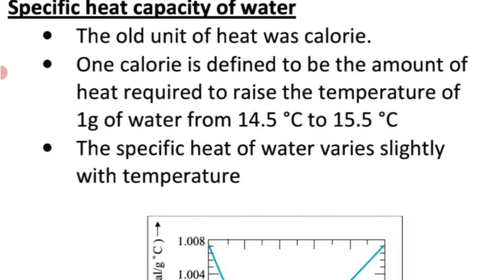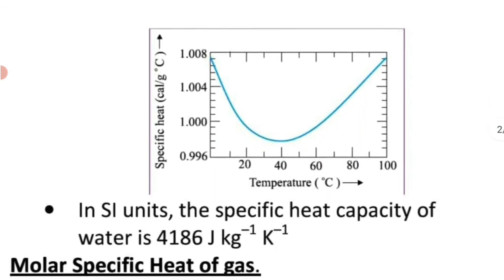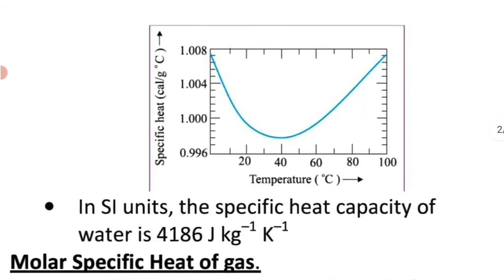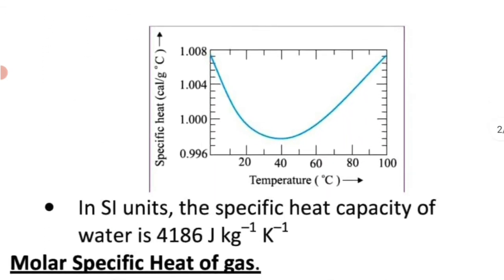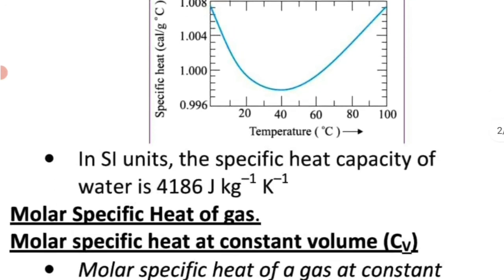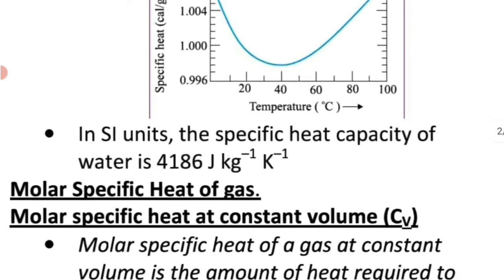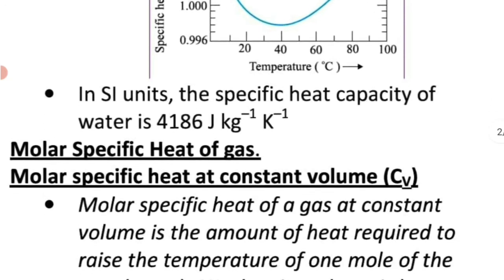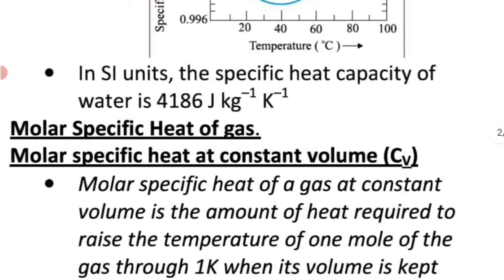Now, the specific heat capacity of water actually varies with temperature. The variation in specific heat capacity of water with temperature is as shown. The specific heat capacity of water is taken to be 4186 joule per kilogram per kelvin, and roughly we take it as 4200 joule per kilogram per kelvin.